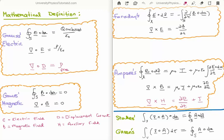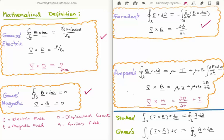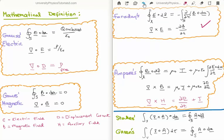At the risk of frightening you, I'm going to immediately show you what the four Maxwell equations look like. On the top left is Gauss's law for electric fields; bottom left is Gauss's law for magnetic fields; top right is Faraday's law for electromagnetic induction; and bottom right is Ampere's law. These can be written using integrals or in differential form. To go from integral to differential form you use two important vector calculus theorems shown at the bottom right: Stokes' theorem or Green's theorem.